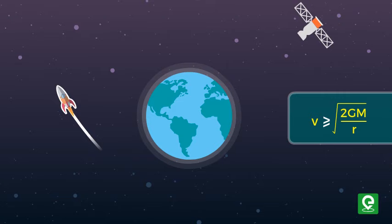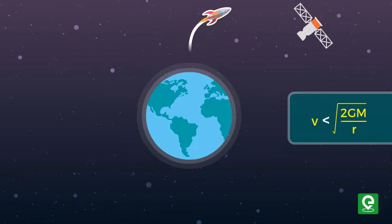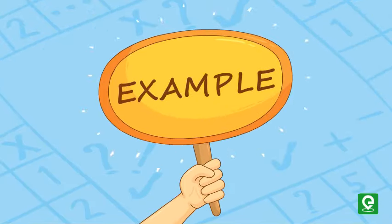However, if the rocket is launched with the velocity less than escape velocity, then it will fall back on Earth due to gravity. Let's solve an example to understand this concept better.